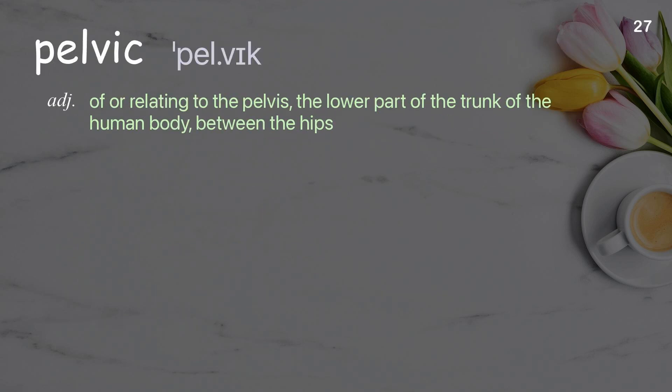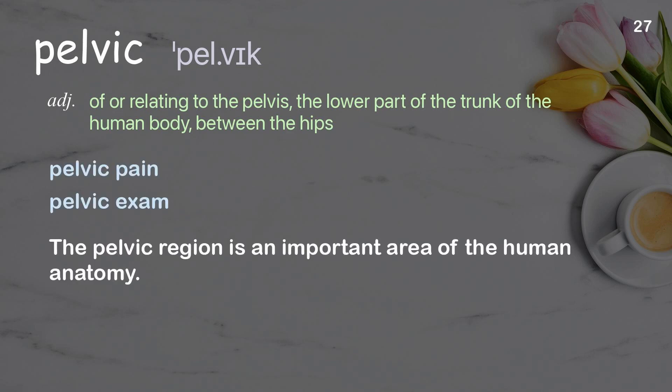Pelvic: of or relating to the pelvis, the lower part of the trunk of the human body between the hips. Examples: pelvic pain, pelvic exam. The pelvic region is an important area of the human anatomy.